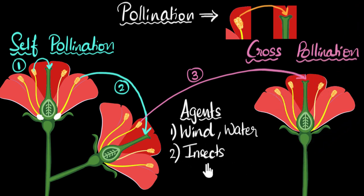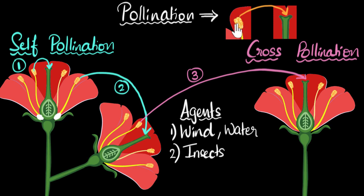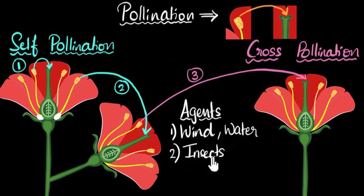These bees turn out to be a major contributor to pollination. Pollination has happened, but that's not the end of the story — it's actually the beginning. The sperms inside the pollen grains still need to travel all the way into the eggs found in the ovaries, which we'll cover in a future video. To summarize: pollination is the transfer of pollen grains from the anther to the stigma. Self-pollination happens within the same plant — within one flower or between two flowers of the same plant. Cross-pollination happens between two different plants. The agents of pollination include wind, water, and insects such as bees.